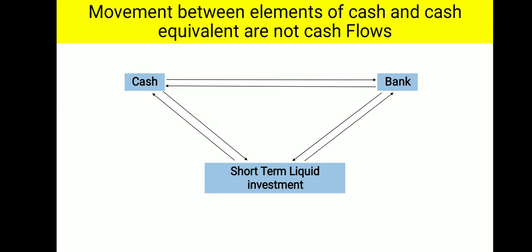Movement of Cash does not mean Flow of Cash in all cases. There are three elements of cash: Cash, Bank, and Short-Term Liquid Investment. Suppose cash is deposited into a bank — it is a movement of cash, meaning cash decreases in hand while bank deposit increases, but it is not an Inflow or Outflow of Cash.